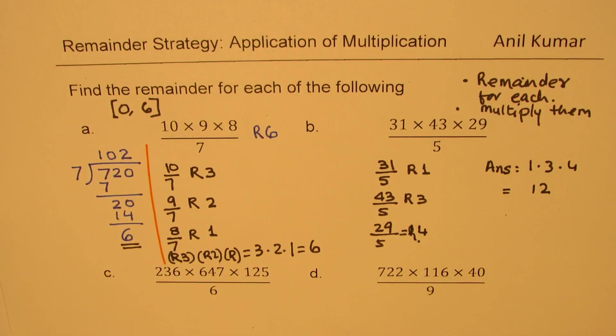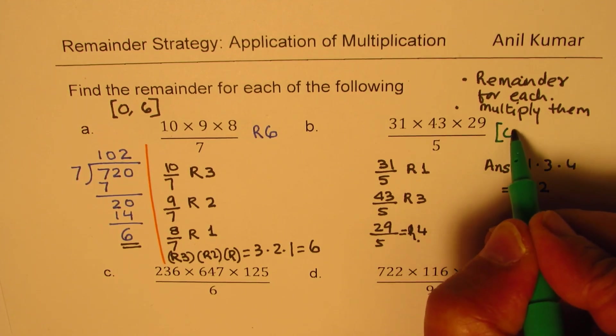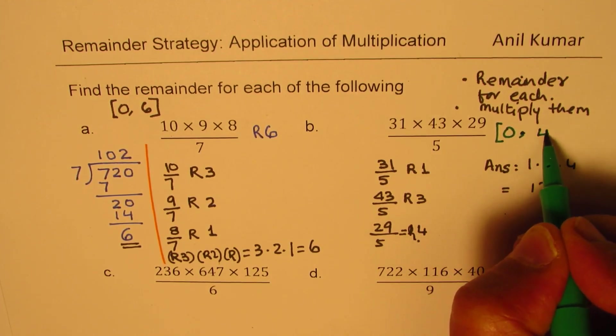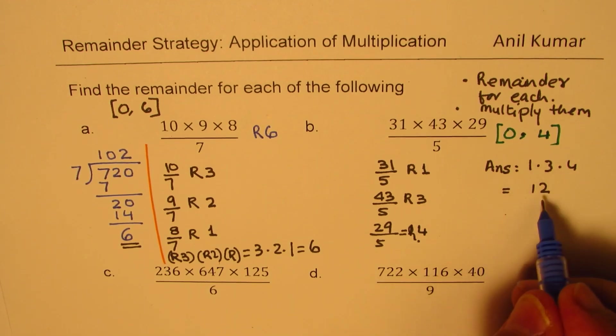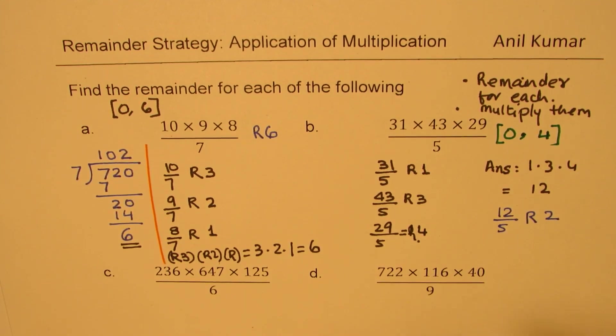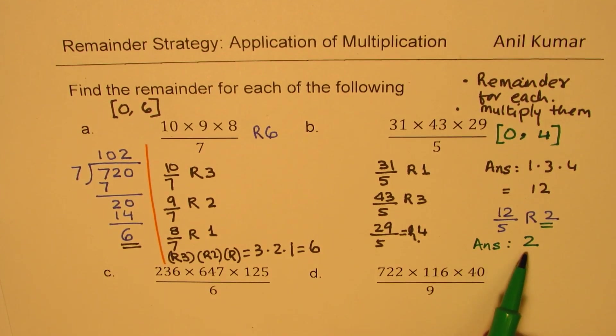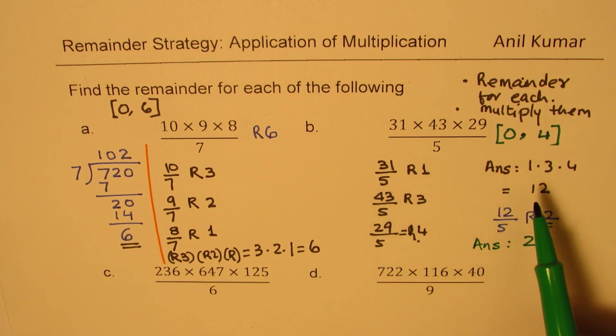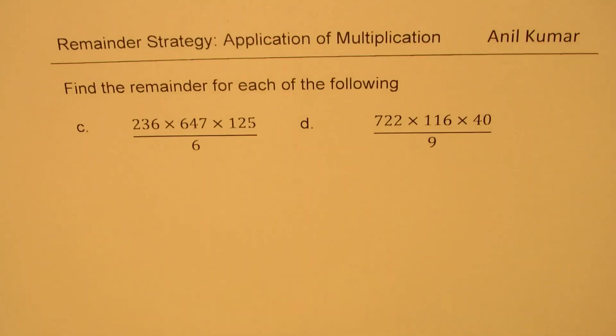Well, remember, the remainder when you are dividing by 5 can only be less than 5. So, it could be from 0 to 4. That is the range of your answer. You get 12. Well, 12 can be divided by 5 and then the remainder is 2 and therefore, the answer should be only number 2. Is that clear to you? So, that is how if by multiplication you get a number which is more than the expected remainder, then divide further and get your answer. Now, I think it's a good time to try C and D.